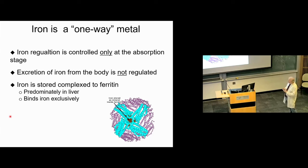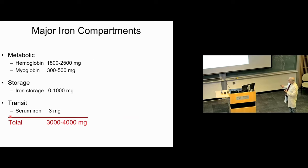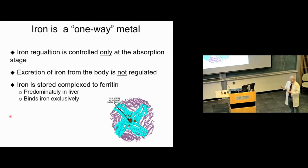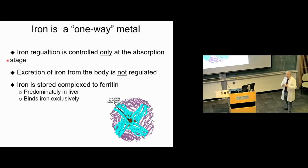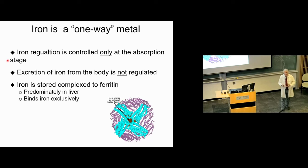The last regulatory step is ferritin, our storage molecule for iron. It is regulated to control the absorption and storage of iron. The excretion of iron is not regulated. Ferritin is a big molecule with many thousands of subunits, a light chain and a heavy chain. Channels bring iron in and it's stored in the middle of the ferritin molecule, then released as needed. It binds iron exclusively — it doesn't bind calcium, magnesium, or any other cations needed for normal physiology.